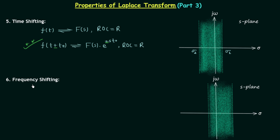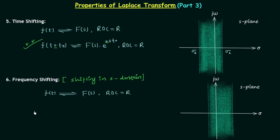Now let's move to the sixth property: the frequency shifting property, also known as shifting in the s-domain. We will state the property without proving it, as the proof is similar to the one in the Fourier transform chapter. The Laplace transform of f(t) is F(s) with region of convergence R. When we multiplied e^(±st₀) to F(s), there was a shift in the time domain. Now if we multiply an exponential in the time domain, there will be a corresponding shift in the Laplace transform — hence the name frequency shifting property.